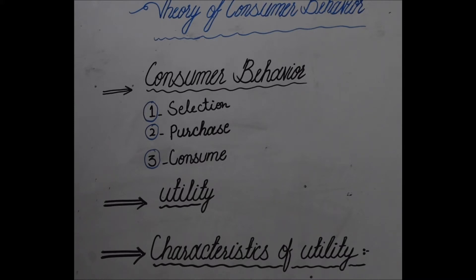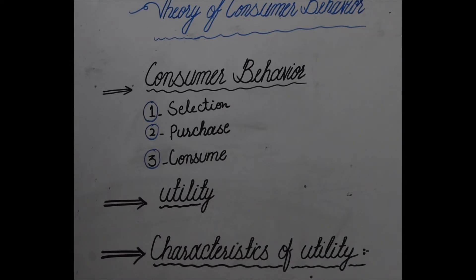Personal consumption expenditures form the largest part of the national product. If we take the example of Pakistan, we know that people spend more than 86 percent of their incomes on consumer items and save less than 14 percent. If we compare these two values, we find that the spending and consumption value is much higher than the saving value. Every society tries to produce only those goods which people want to consume.